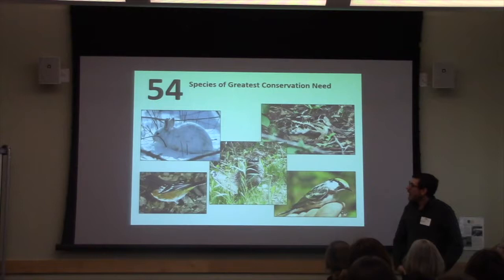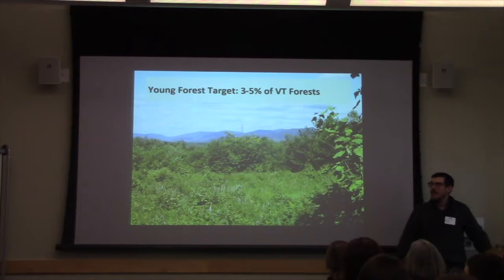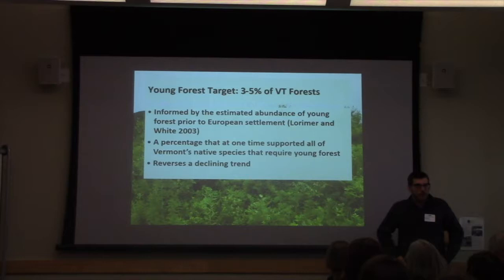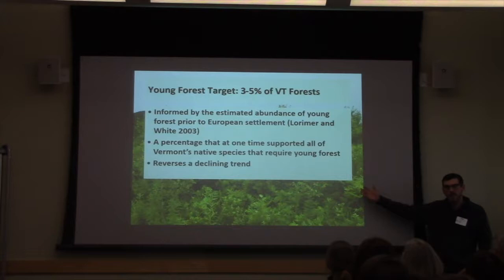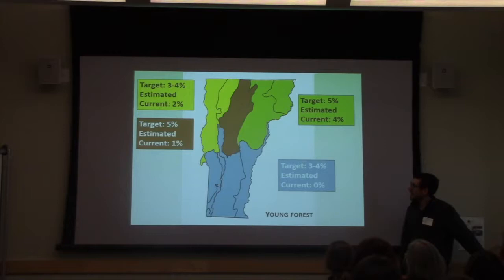Species that depend on young forest include snowshoe hare, towhees, grouse, woodcock, and chestnut-sided warbler. There are 54 species of greatest conservation need that depend on young forests just in Vermont. We get to a target of 3–5% young forest, informed by what was here prior to European settlement — an amount that once supported all of Vermont's native species that depended on young forests. If we could get back to that, we could hopefully support those species. But we're not there; we have a long way to go.